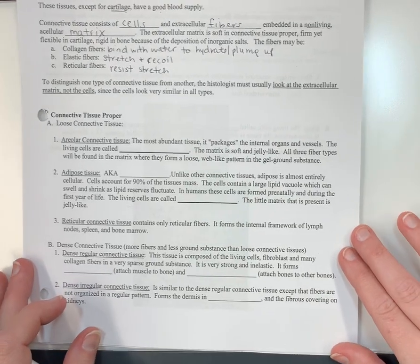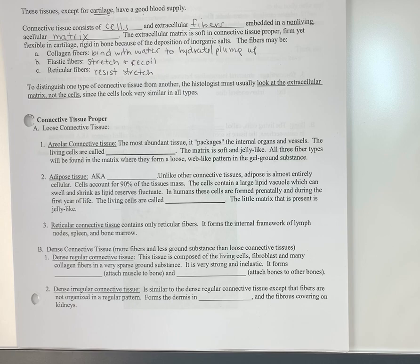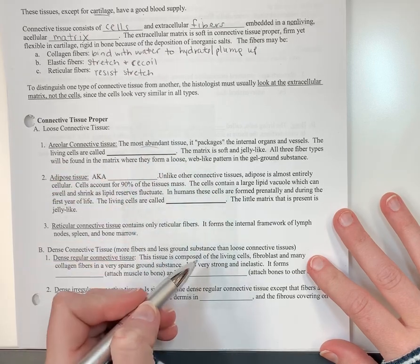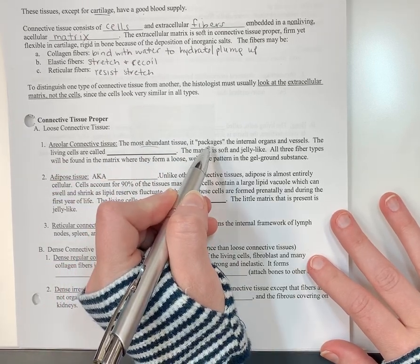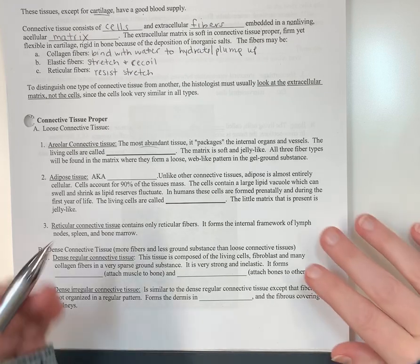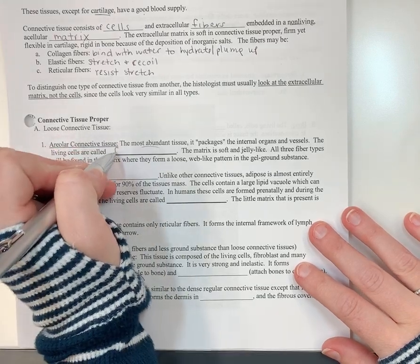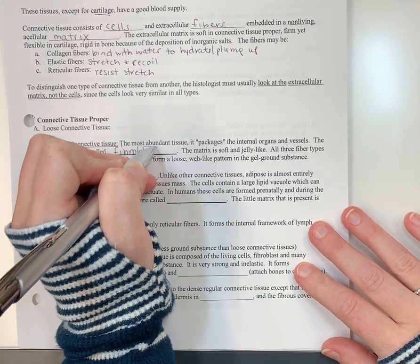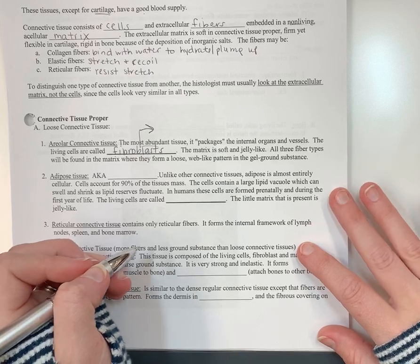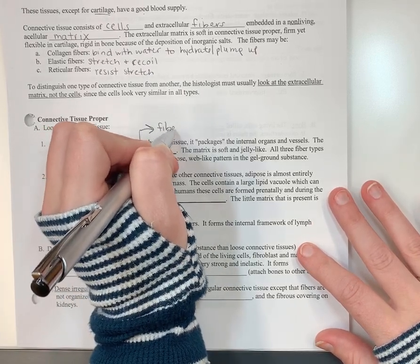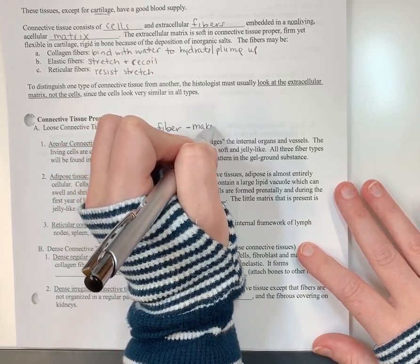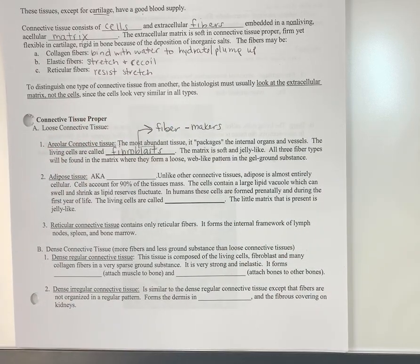So our regular traditional connective tissue, there is three types. Areolar connective tissue. This is the most abundant, the most common. It is what wraps up the internal organs. It's what wraps up the outside of blood vessels. Our living cells are called fibroblasts. They're called fibroblasts because fibro sounds like the word fiber, right? Blast means to form or make. So we're going to call them fiber makers. Fibroblasts.